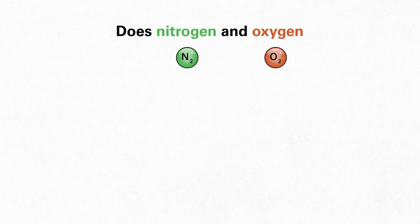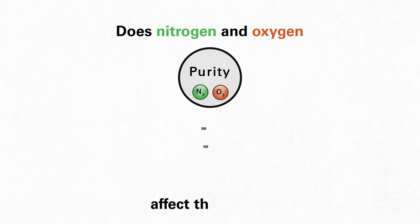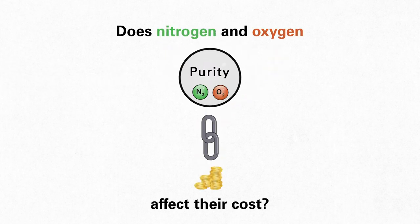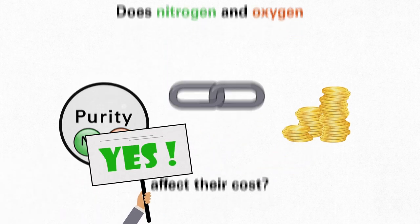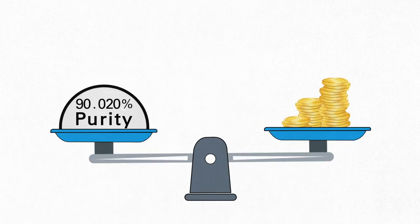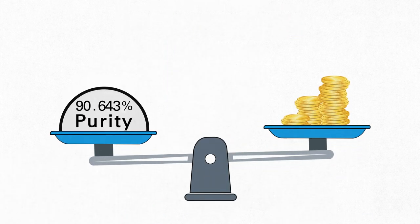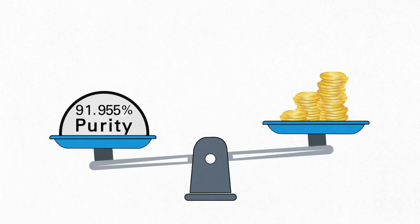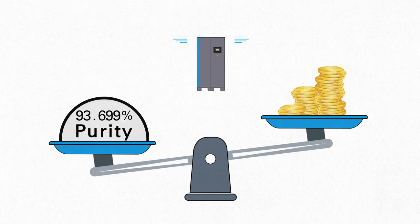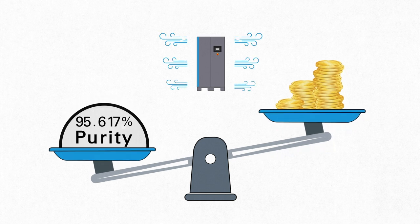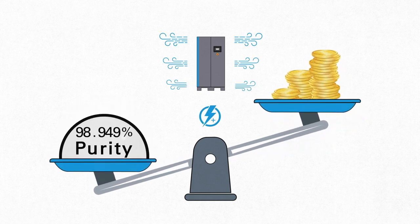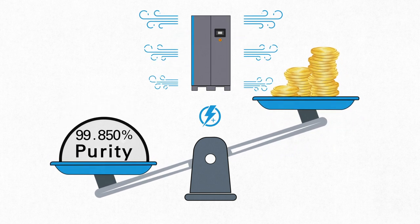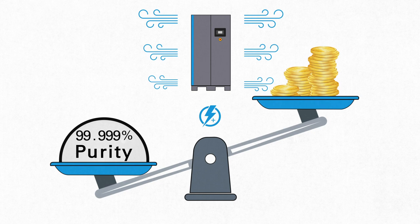Question: Does nitrogen and oxygen purity affect their cost? Well, yes. The higher their purity, the more they cost to produce. Higher purities require more compressed air, more energy, and often a bigger compressor and gas generator.